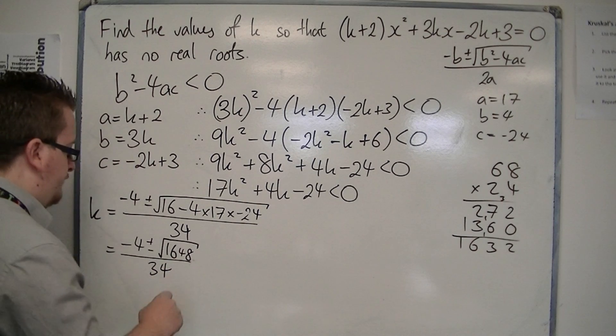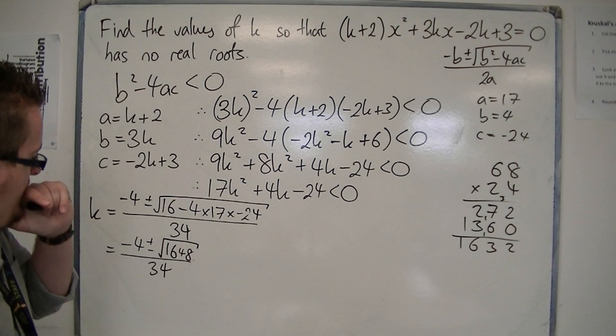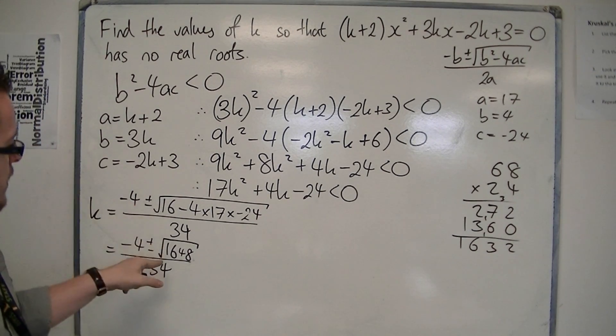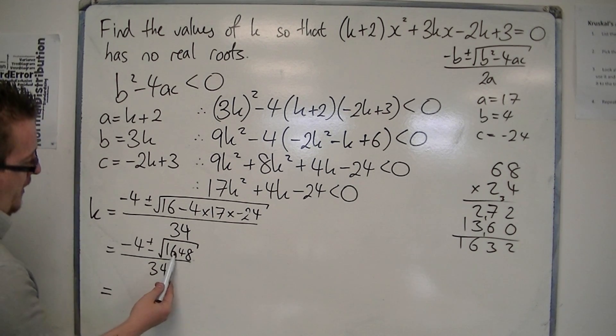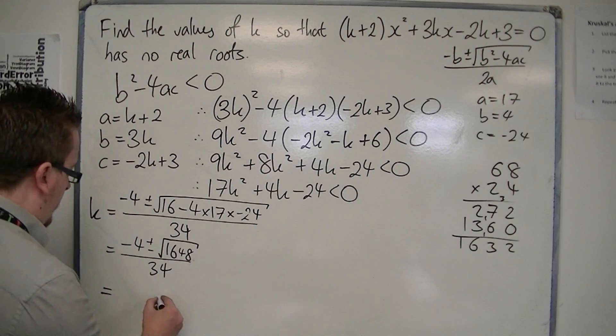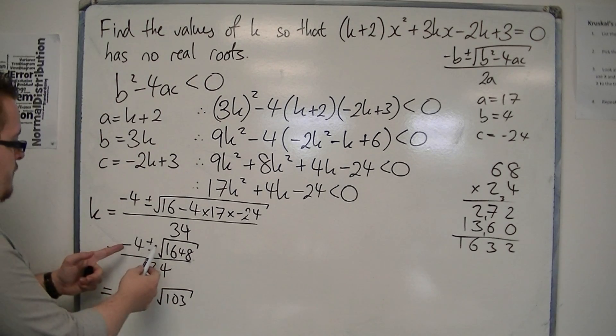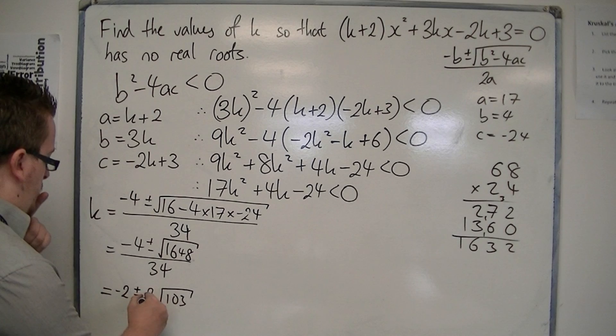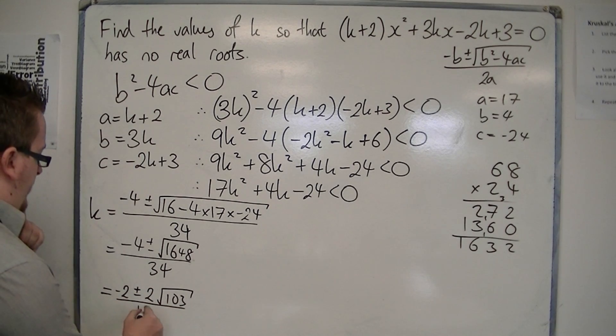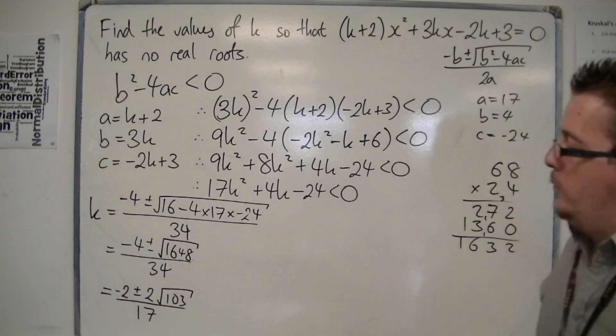All over 34. Now looking at that, 1648 is divisible by 16, so we can simplify that. So that's 103, so that's a square root of 103, brings out factor of 4, so we can divide everything by 2, so we've got -2 plus or minus 2 lots of √103 over 17. Okay, that stage, I wouldn't worry too much about, but that's how it was simplified down.